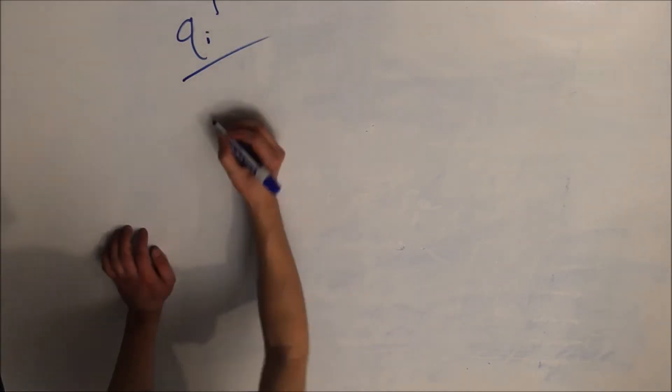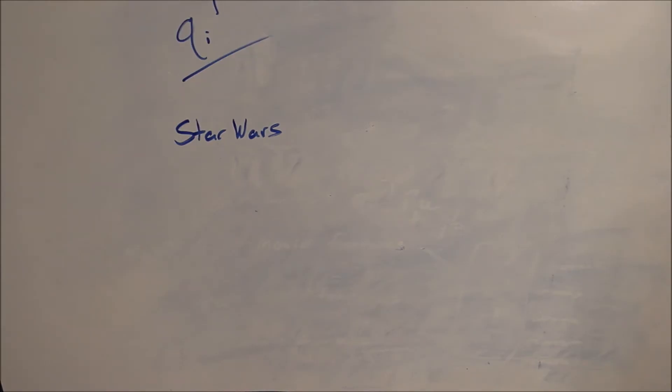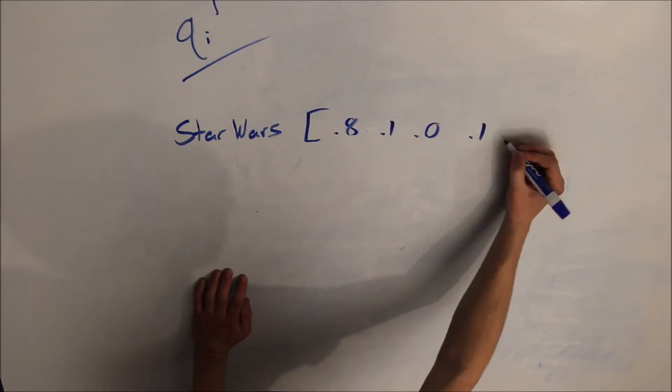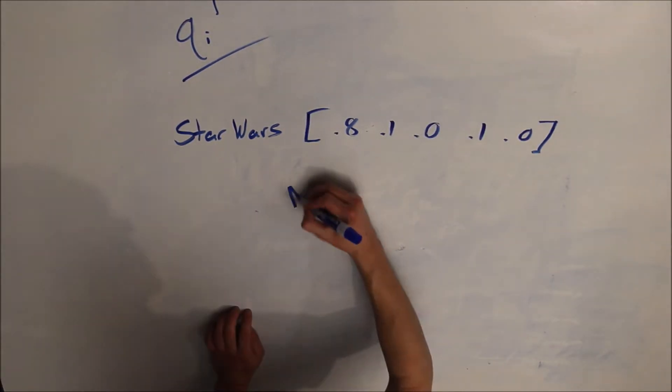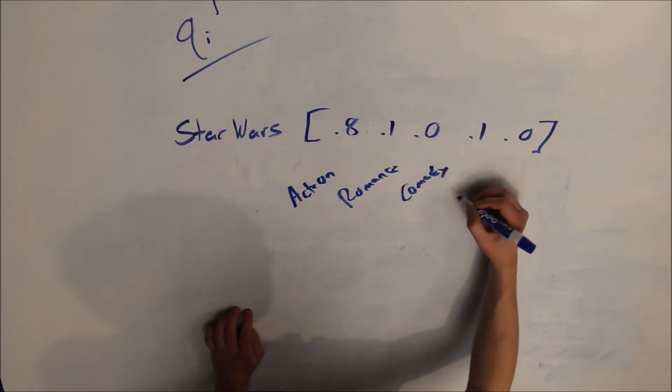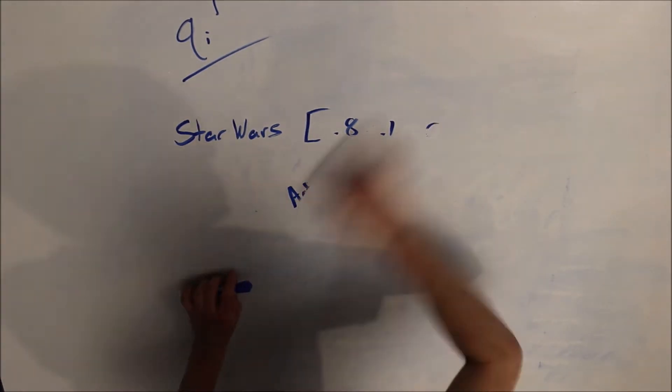So let's solve for QI first, looking at Star Wars. So if we break it down, we can see approximately 0.8 of Star Wars is action, 0.1 is romance, 0.1 is drama, and 0 are comedy and horror apiece.